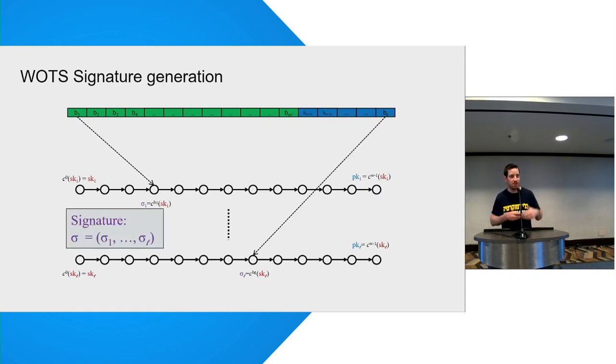And basically the signature is just all of these hash values. So if we want to sign larger messages, we need to provide more hash values, which make everything longer. And we also need to sign the checksum. And the reason is because we don't do it, then the thing can get broken.